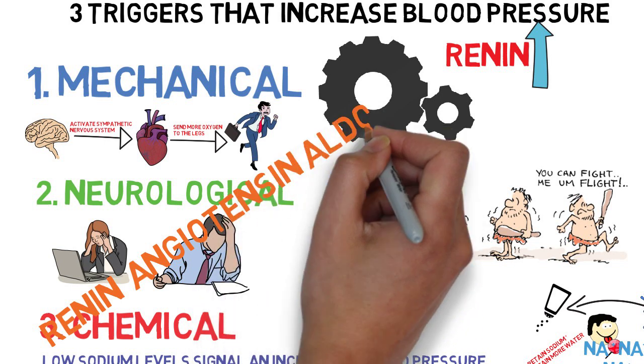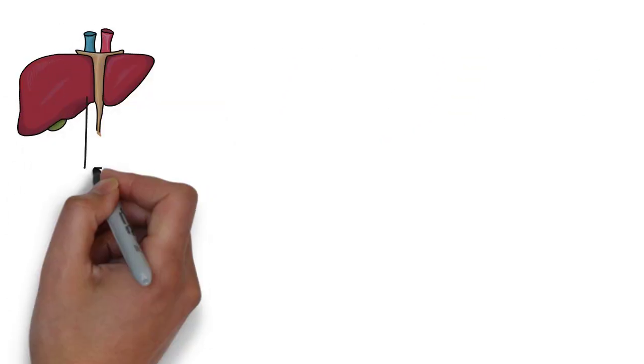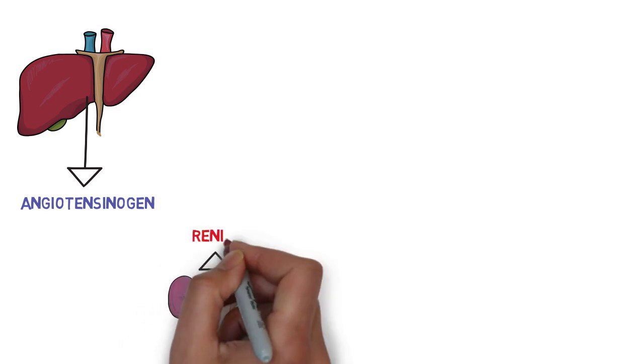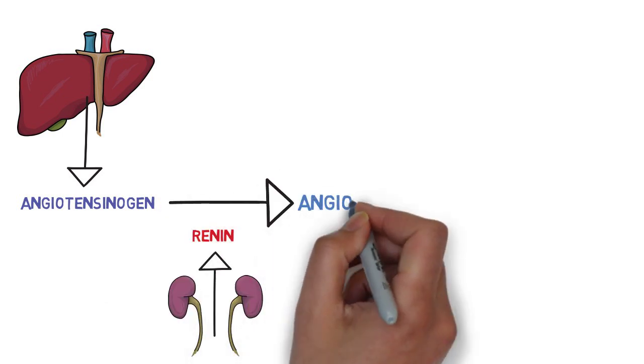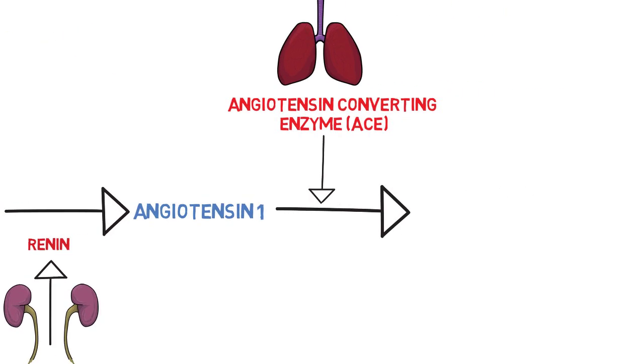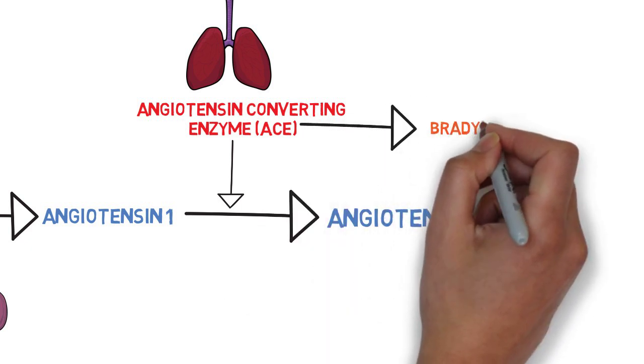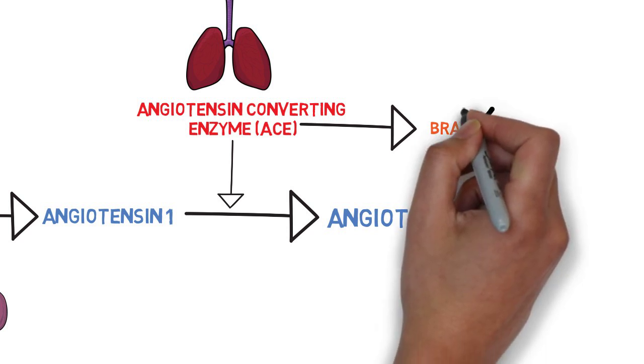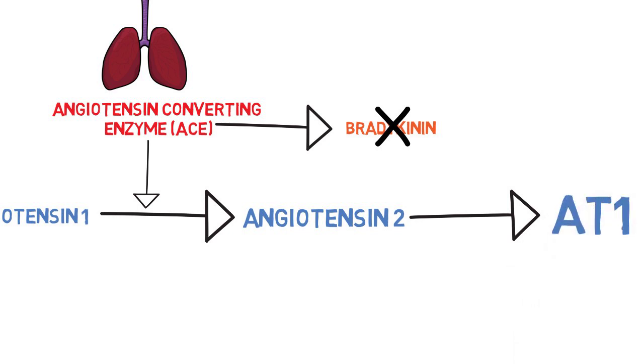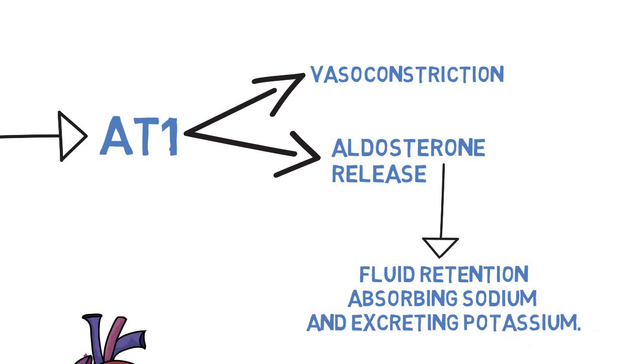These three triggers all activate the renin-angiotensin-aldosterone system to increase blood pressure. This is how the system works. First, the liver releases angiotensinogen. If the body detects low blood pressure through the triggers mentioned earlier, renin is released. Renin is the enzyme responsible for converting angiotensinogen to angiotensin 1. Then angiotensin converting enzyme or ACE converts angiotensin 1 to angiotensin 2. Angiotensin converting enzyme also has an additional role of inactivating bradykinin. This is a peptide that causes blood vessels to dilate. Angiotensin 2 then binds to angiotensin type 1 receptor or AT1 receptors. This leads to vasoconstriction and the release of aldosterone, which leads to fluid retention by absorbing sodium and excreting potassium.